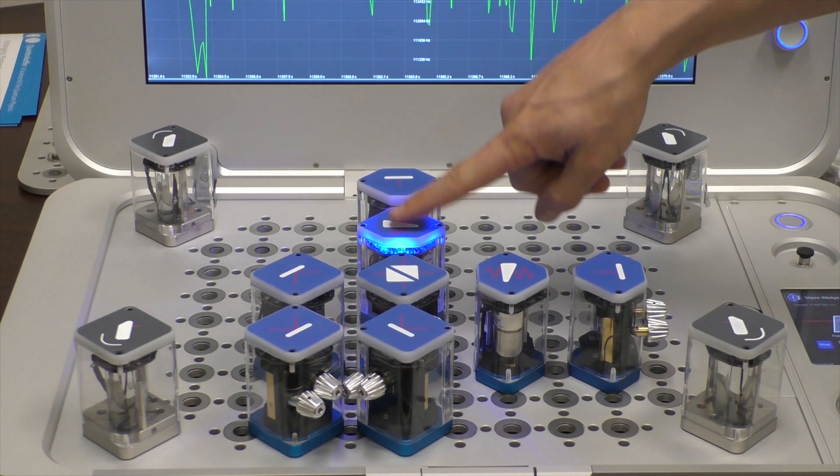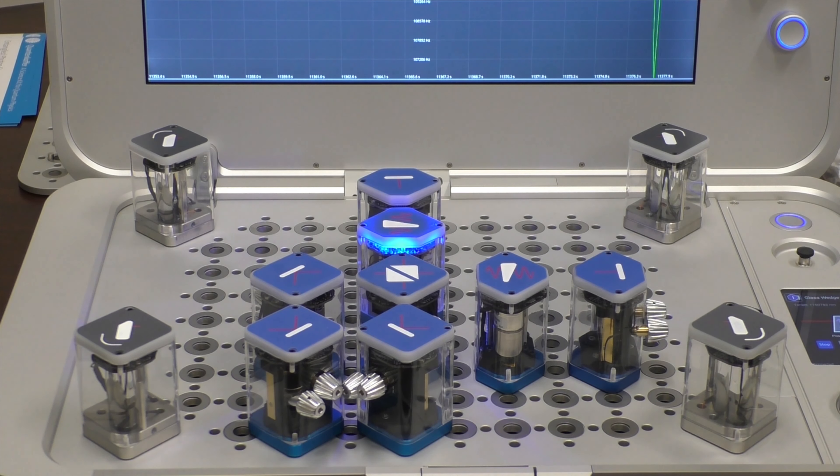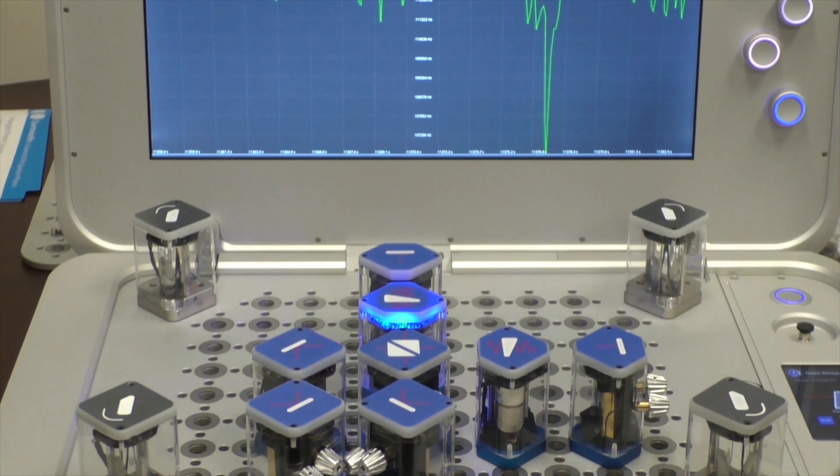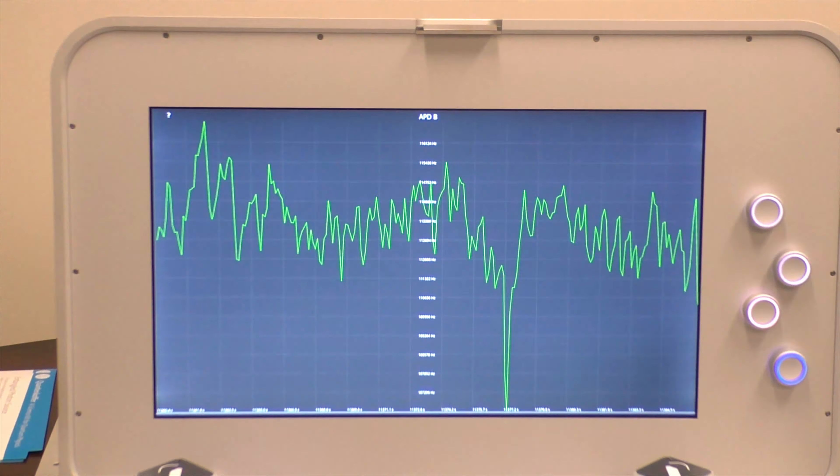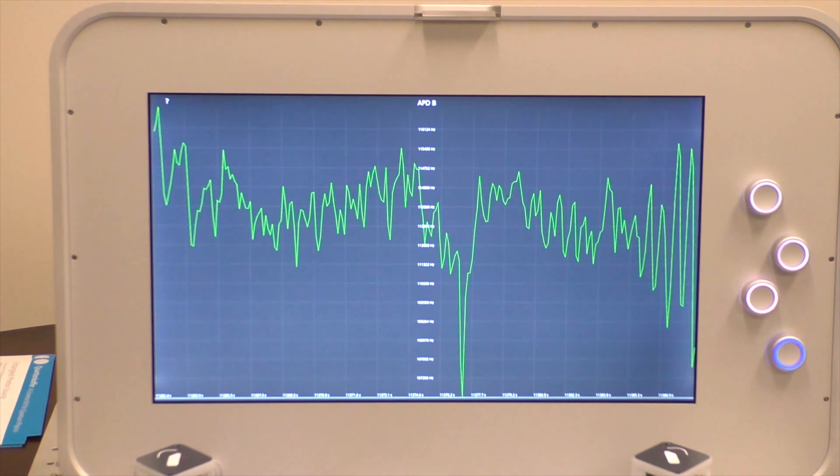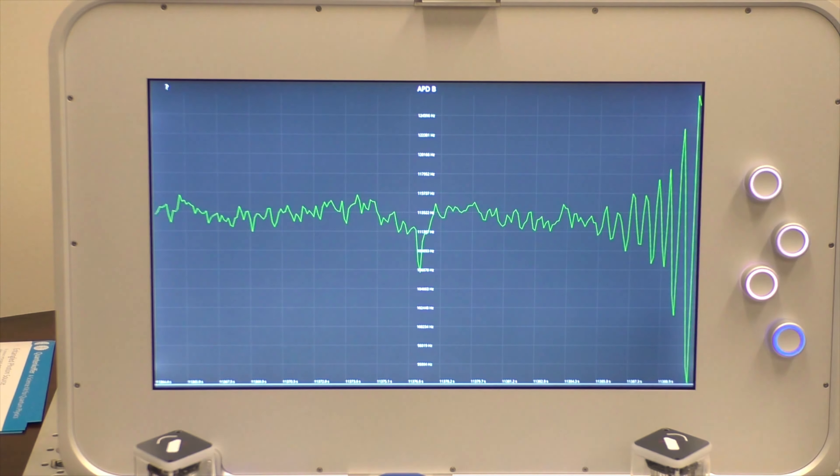So I'm going to select this glass wedge and I'm going to just let it drive automatically over this point that I previously set up here.